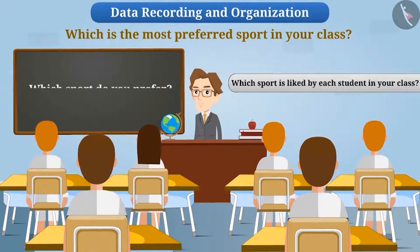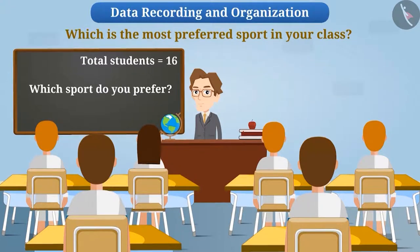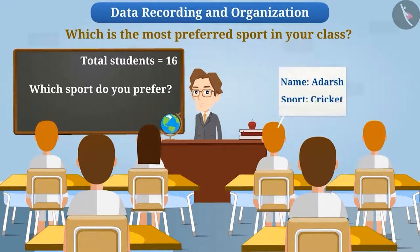Suppose there are 16 students in your class. You can ask each student about their preferred sport, or you can use some convenient method like writing their name and preferred sport on a slip. By using any of these methods, you will know the preferred sport of each student.